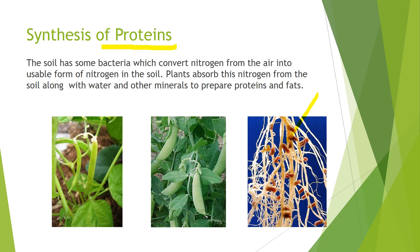Leguminous plants are plants which belong to the pulse family — legumes like beans, pea, gram and all these. These plants have root nodules, and in these root nodules there are some bacteria. These bacteria collect the gaseous nitrogen from the air and convert it into a usable water-soluble form, that is nitrate. These nitrates are formed by these bacteria and along with water and other minerals, they are absorbed by the plants for making proteins. This is how the plants absorb nitrogen in the form of nitrates from the soil.